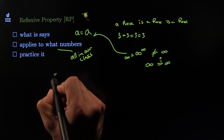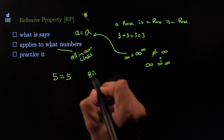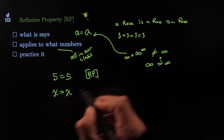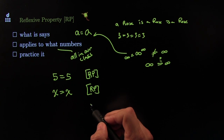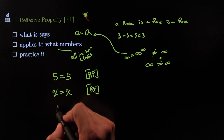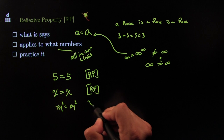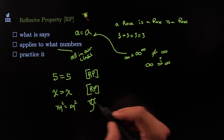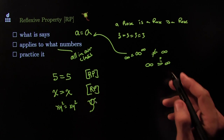Let's practice it. It would say something like: is five equal to five? Yes — by the Reflexive Property, the one we just learned. Is x equal to x? Yes, by the Reflexive Property, as long as x is one of the numbers from our class. What is xy² equal to? xy² — by the Reflexive Property. If you want, you can even use the icon to make it pretty. That's the Reflexive Property.